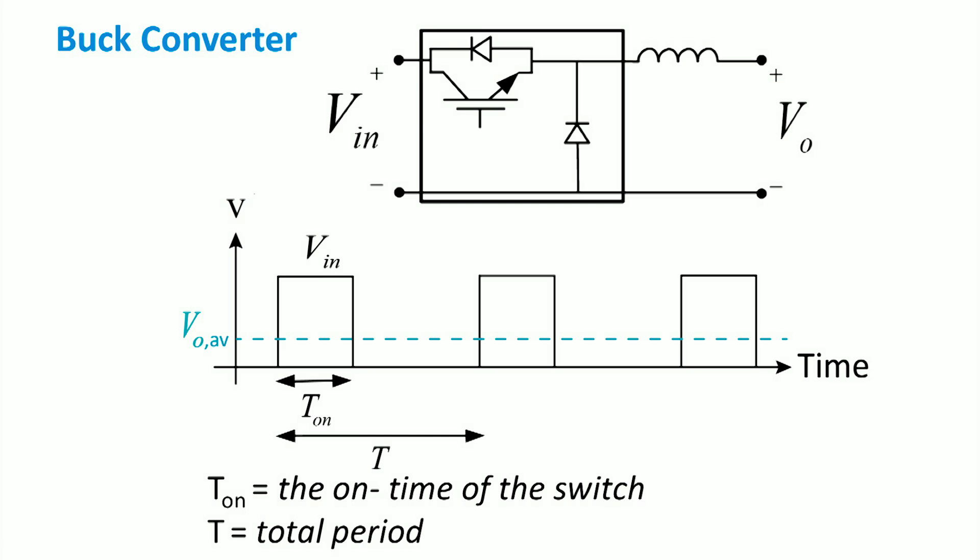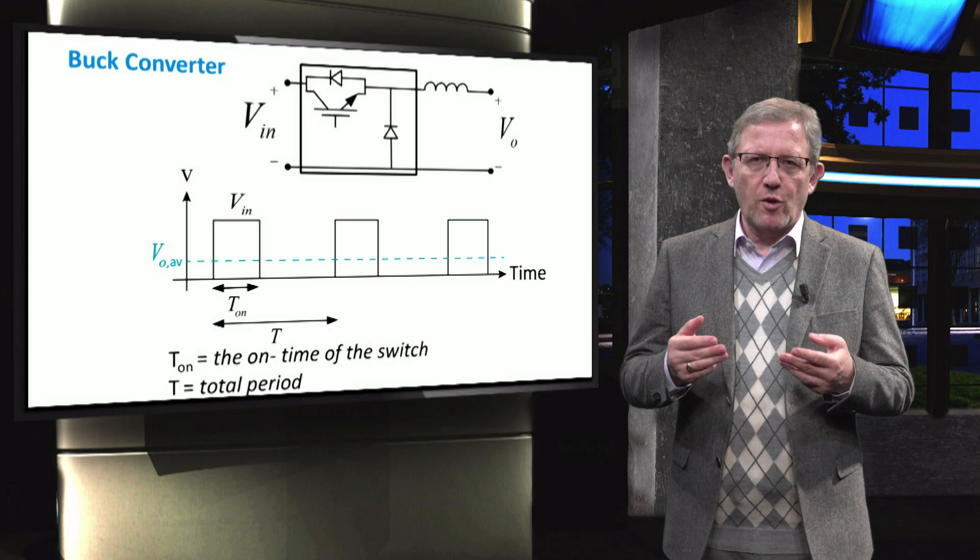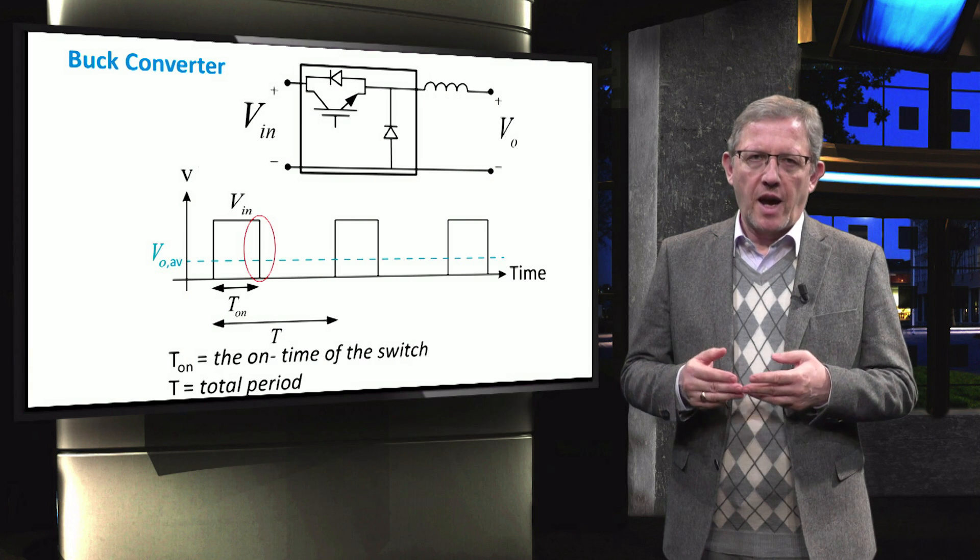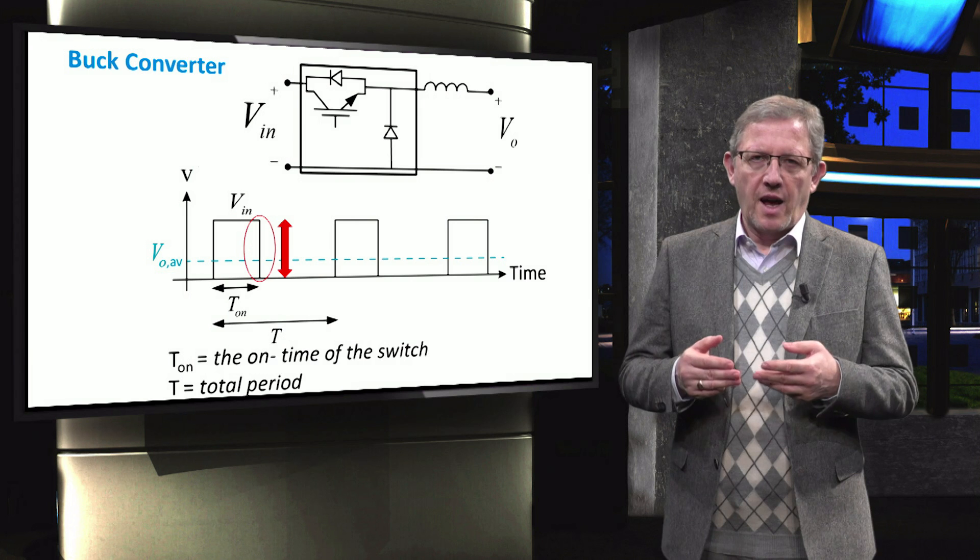We define T_on as the on time of the switch whereas T is the total time of a period. If the switch is on, then the output voltage is equal to the input voltage. And if the switch is off, then the output voltage is equal to zero. The output voltage is changing between two values, V_in and zero and thus has a very large ripple.